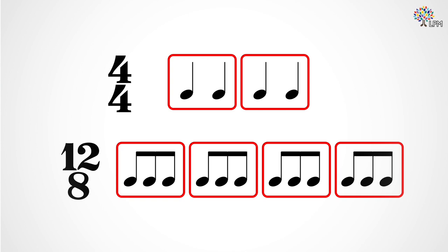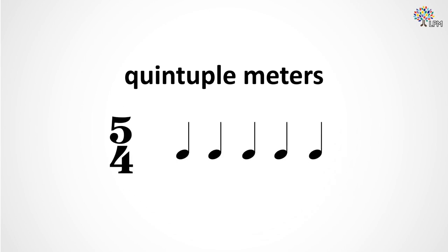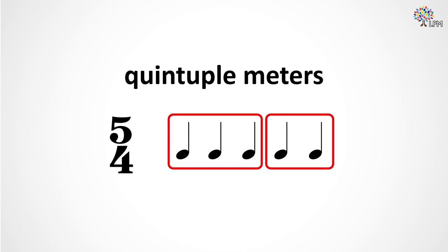We can't really do that in 5, what we call quintuple meters. The composer has to decide which little beats will have more or fewer notes in them when writing in an irregular meter. In 5, the composer must pick one subdivision that gets three counts and one that gets two. Either way works, and the composer can even mix them up within a piece.